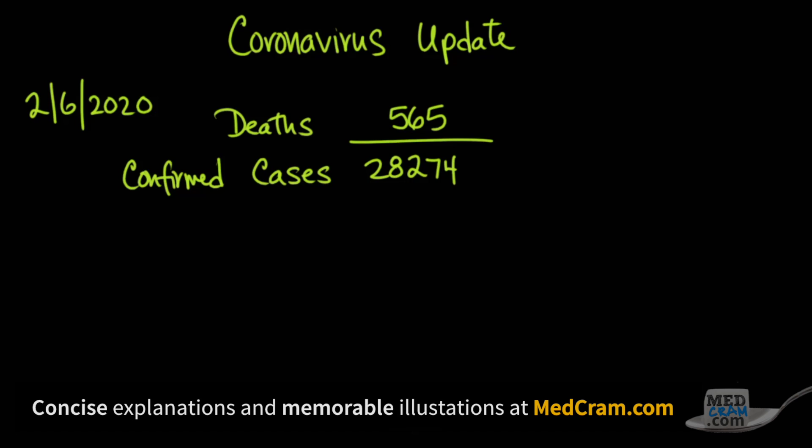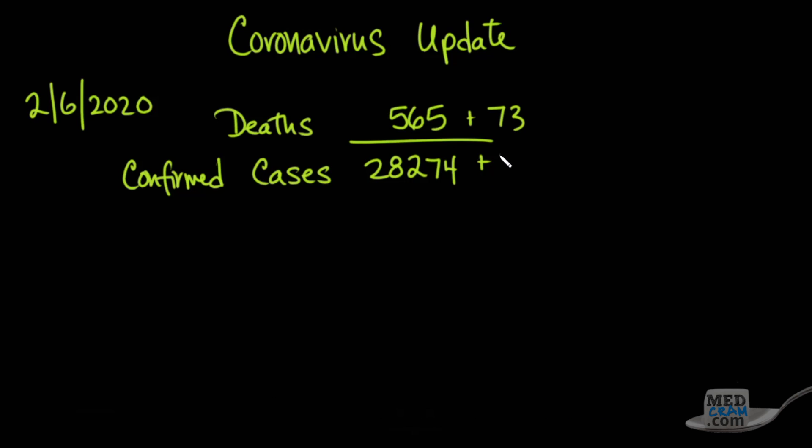So getting back to the coronavirus deaths today, 565 confirmed cases is 28,274. Interestingly, the recovered is 1,178. And we did say earlier in the week to look for these to go up.